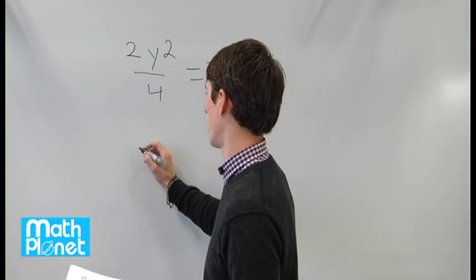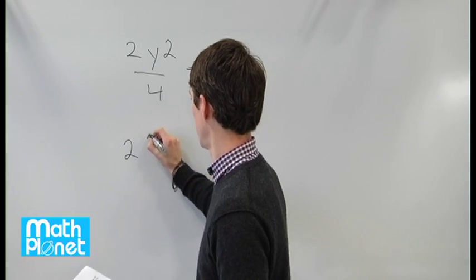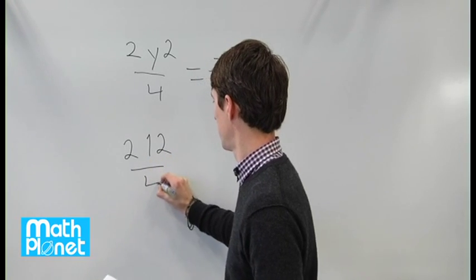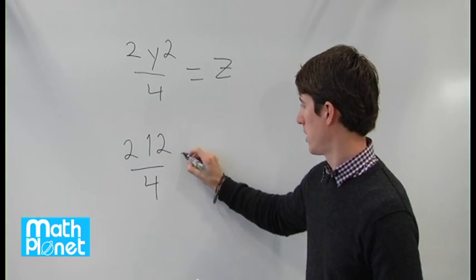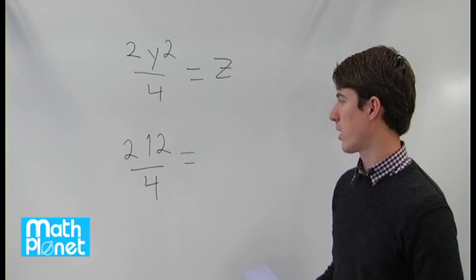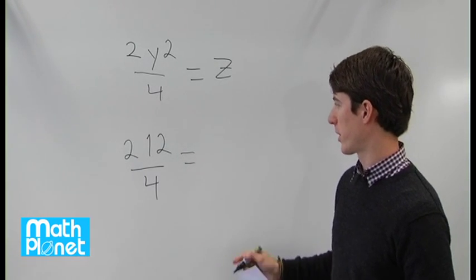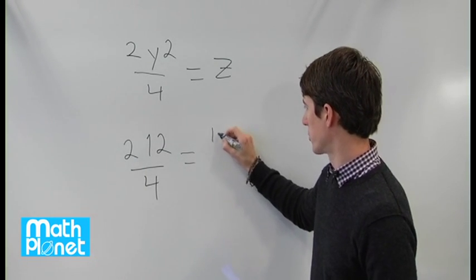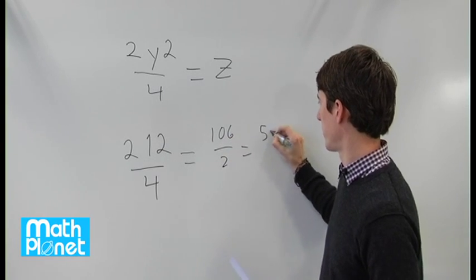So perhaps we can start with 1 and see what we get with this. If you divide 212 by 4, then we'll get, let's see, 106 over 2, which is 53.